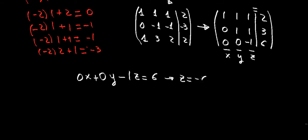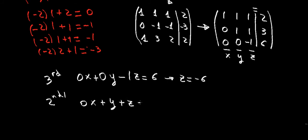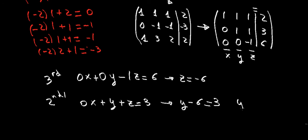Once we have z, we go to the second row. Writing all the terms: 0 times x plus y plus z equals 3. We now know z equals minus 6, so the equation becomes y minus 6 equals 3, which means y equals 9.